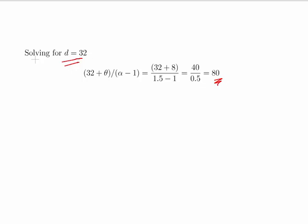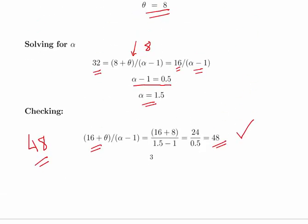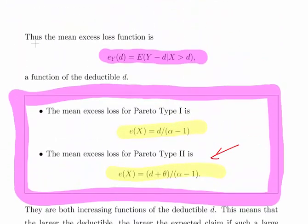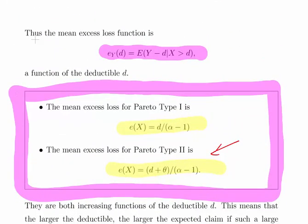This question is very similar to the method of moments. That sort of is the key thing here that you should have seen in other questions. Trying to, given the mean and the variance, figure out the parameters. This question is a close cousin of that: given mean excess loss functions, trying to figure out what the parameters are and use them to find out another value.